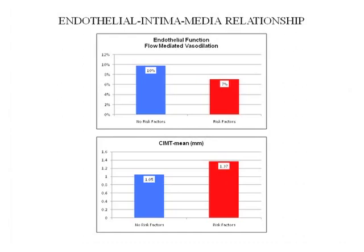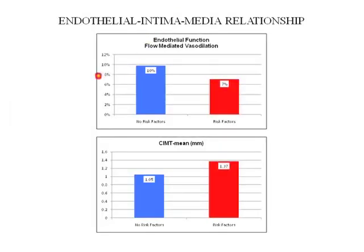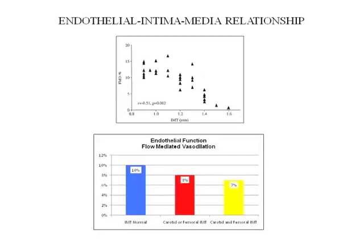Intermediate thickness was 1.05 millimeters in those with no risk factors, and 1.37 in those with risk factors. Risk factors lead to endothelial dysfunction — measurable as flow-mediated vasodilatation — which leads to soft plaque deposition manifested as increased intermediate thickness. The worse the endothelial function, the worse the flow-mediated vasodilatation, the more plaque you are going to have.